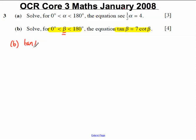I've got tan beta equals 7 cot beta. You'll remember that cot beta is 1 over tan beta. That's its definition. So tan beta must equal 7 multiplied by 1 over tan beta, which is simply 7 divided by tan beta. So I've got tan beta equals 7 over tan beta.